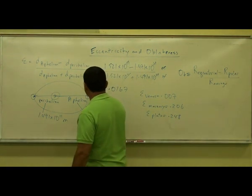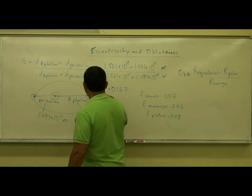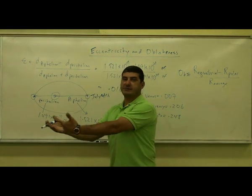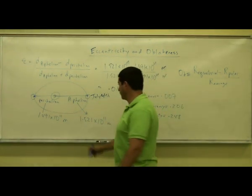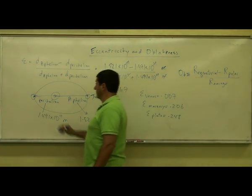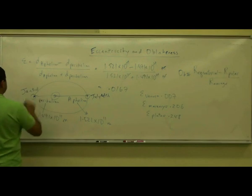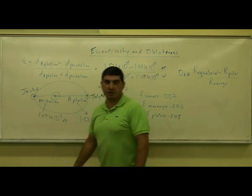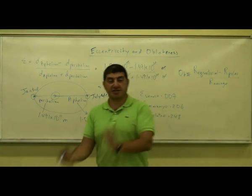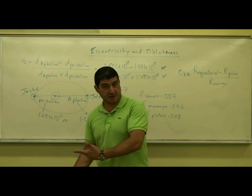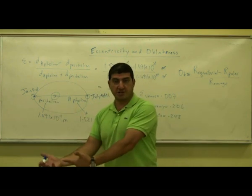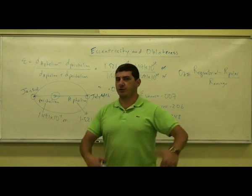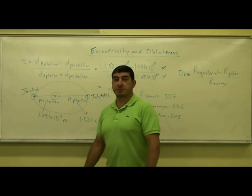Aphelion for the Earth occurs around July 4th — Independence Day for America. I tell my students that's when America became far from England. Perihelion occurs on or about January 3rd, about six months later. People are surprised because January is one of the coldest months in the Northern Hemisphere — but that's only for the Northern Hemisphere. For the Southern Hemisphere, January is their summer, and since they're closer to the Sun then, their summer is arguably a little warmer than summer in the Northern Hemisphere. Why seasons occur is a topic for another day.